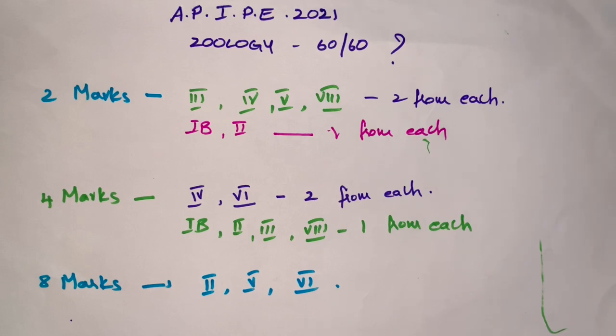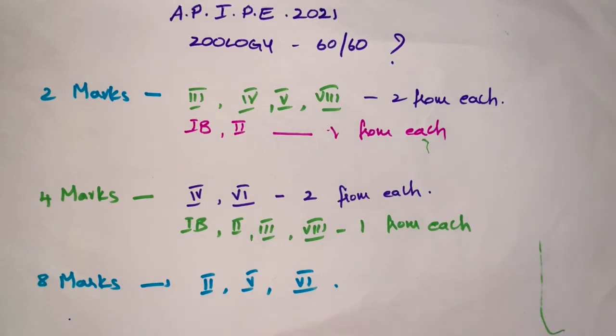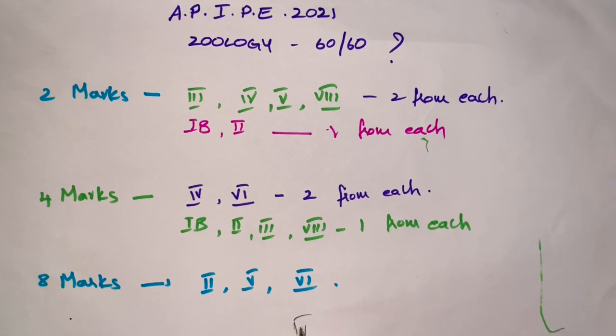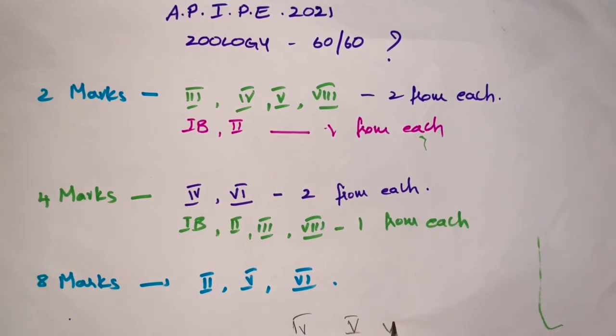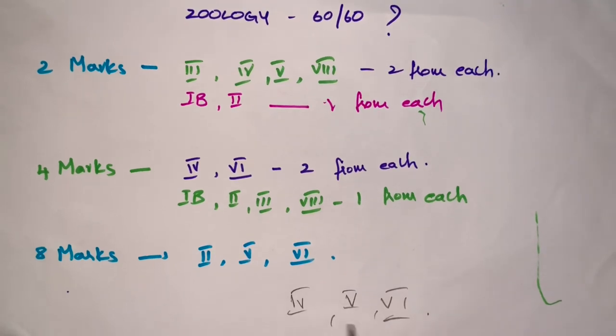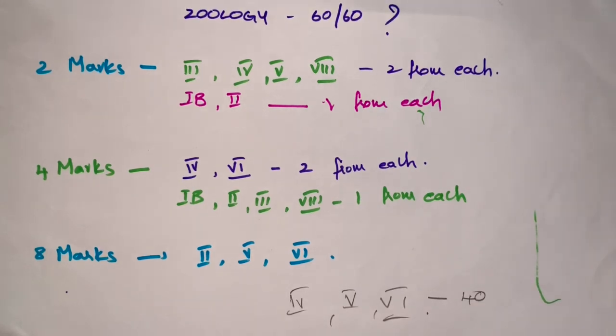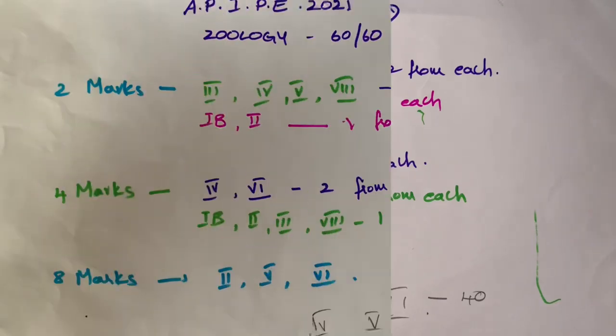If people study the fourth chapter, fifth chapter, and sixth chapter thoroughly, without giving any choice in two marks, four marks, and eight marks, you can easily get 40 marks by studying only these three chapters. If you read these three chapters, you will definitely get 40 marks. This is the tip for today: take your own time and concentrate your revision on chapters with highest weightage, that is, the genetics chapter.